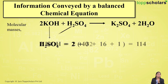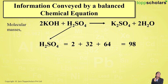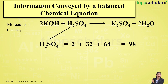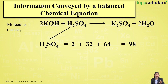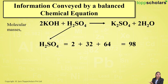Now for sulfuric acid: it is made up of 2 atoms of hydrogen, 1 atom of sulfur, and 4 atoms of oxygen. The atomic mass of hydrogen is 1, so 2 atoms gives 2; atomic mass of sulfur is 32; and atomic mass of oxygen is 16, with 4 atoms giving 64. When we add the atomic masses of the constituent elements, the molecular mass of sulfuric acid comes out to be 98.